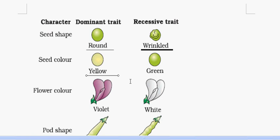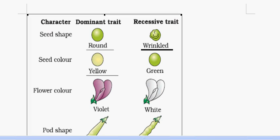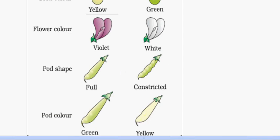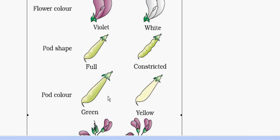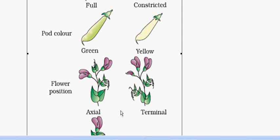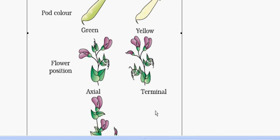Pod shape: full is dominant, and constricted is recessive. Pod color: green is dominant, and yellow is recessive. Flower position: axial — meaning in between the inter-nodes — is dominant; terminal, meaning at the top or end, is recessive. Stem height: tall is dominant, and dwarfness is the recessive trait.